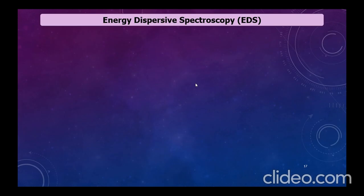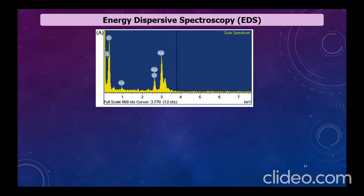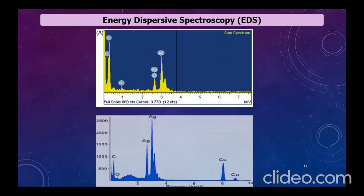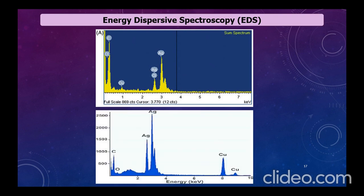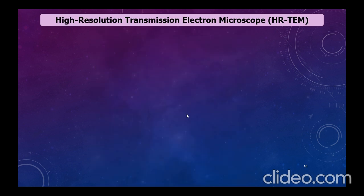EDS (energy dispersive X-ray spectroscopy) is coupled with SEM to provide elemental composition information. EDS identifies the chemical elements present in nanoparticles and their distribution across the sample. For example, one sample showed copper, carbon, chlorine, and silver, while a second sample showed carbon, oxygen, silver, and copper.